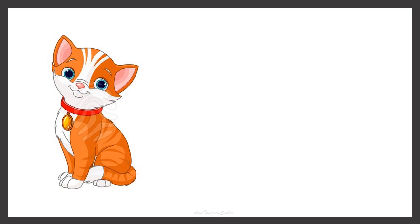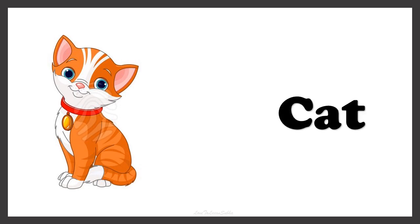Here this one is CAT. To find the article that needs to be placed in front of the word CAT, we need to check the first letter of this word. The first letter of the word CAT starts with the consonant C. So whenever the word starts with a consonant, we use the article A. So this is A CAT.